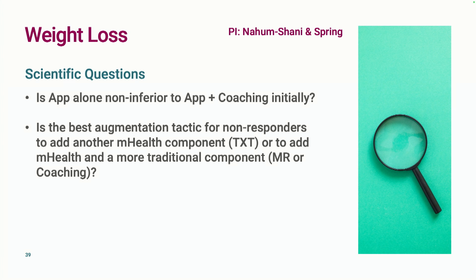The second question is: what's the best augmentation tactic for non-responders? Is it okay to add another mobile health component like text messaging? Or do we need to add text messaging plus one of the traditional, more expensive components — either meal replacement, where meals are delivered to your door, or coaching for one-on-one support?